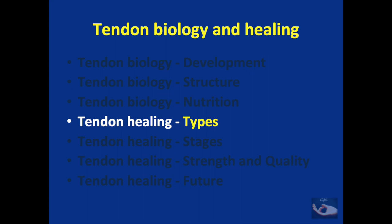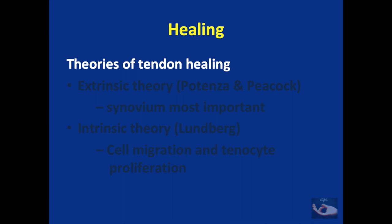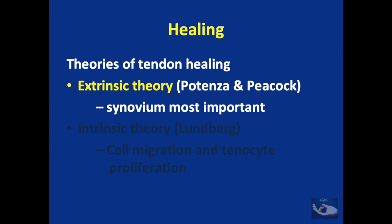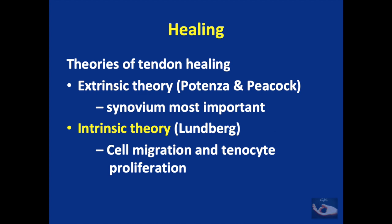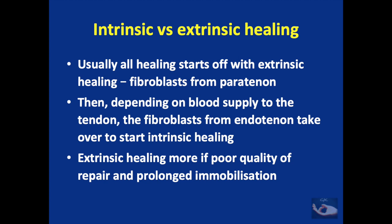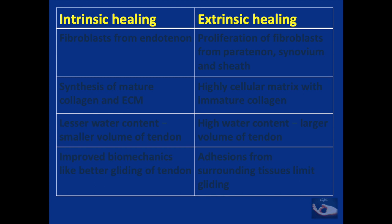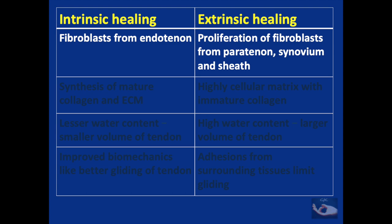Before discussing the details of tendon healing, we need to know the two types of healing that can occur. The extrinsic theory, put forward by Potenza and Peacock, states that the synovium is most important. The intrinsic theory, proposed by Lundborg, says that cell migration and tenocyte proliferation are most important. Usually all healing starts with extrinsic healing — fibroblasts from the paratenon start the process. Then, depending on blood supply, fibroblasts from within the endotenon take over to start intrinsic healing. Extrinsic healing predominates when there is poor quality of repair and prolonged immobilization.